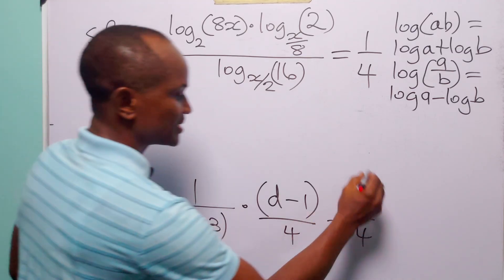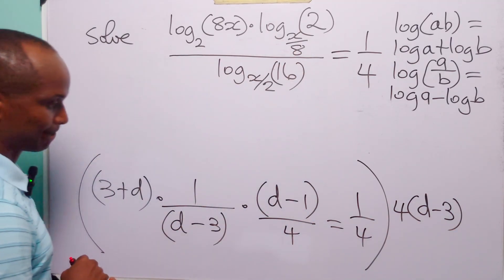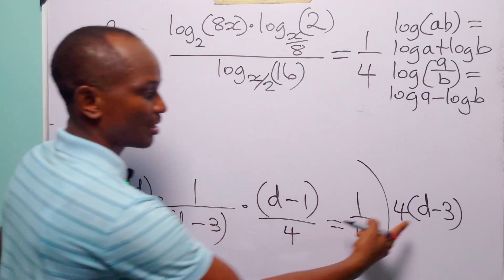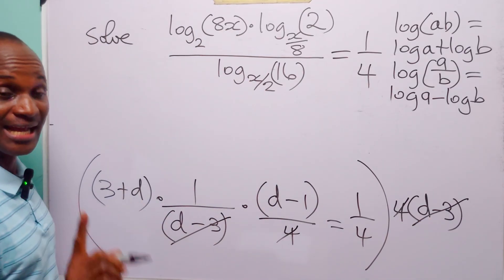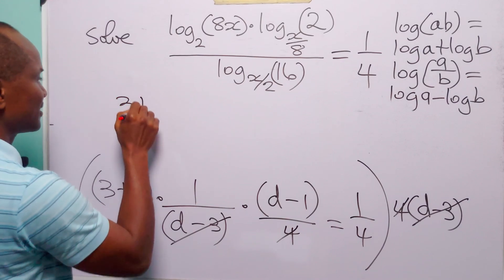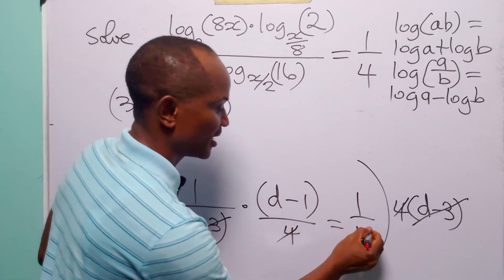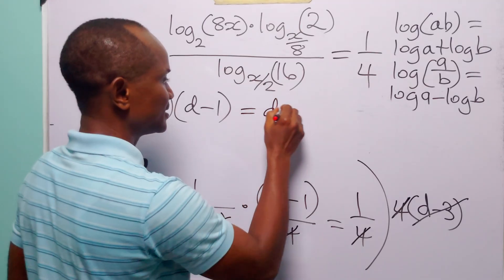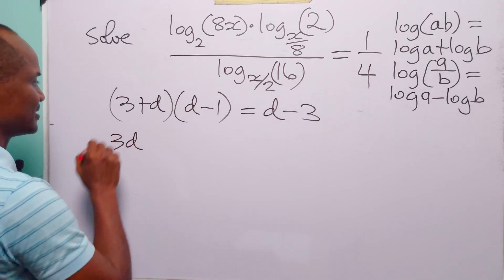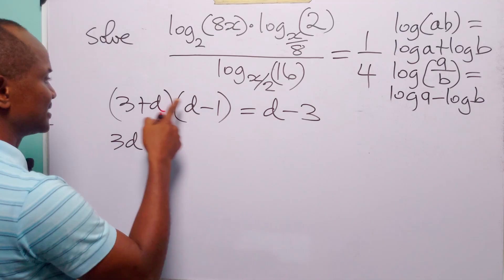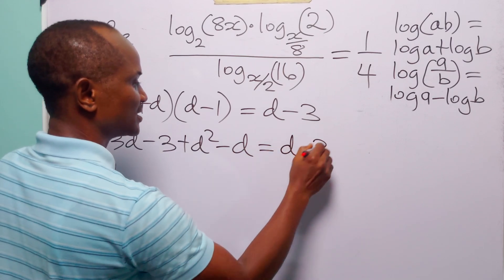Now let us multiply through by 4(d − 3). On the left-hand side, 4 cancels 4 and (d − 3) cancels (d − 3), leaving (3 + d)(d − 1). On the right-hand side, 4 cancels 4, leaving (d − 3). Expanding the brackets: 3d − 3 + d² − d equals d − 3.